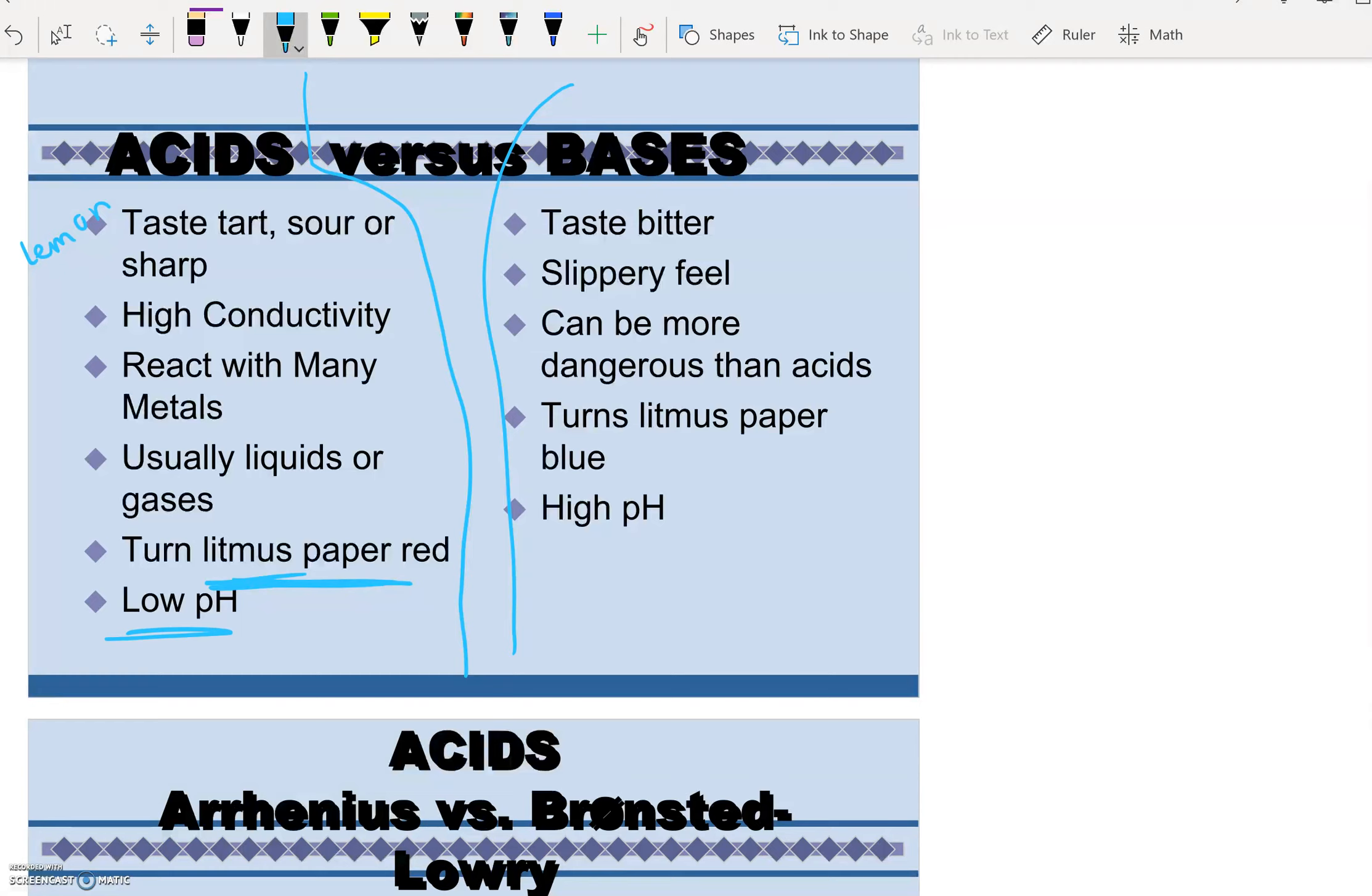So our pH scale is going to go from 0 to 14. 0 to 7 here are our acids. That's what it means by low pH. Bases are bitter.